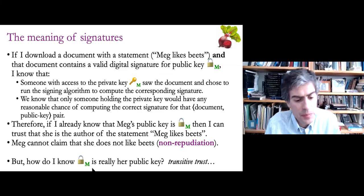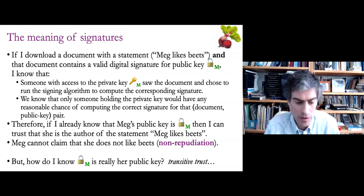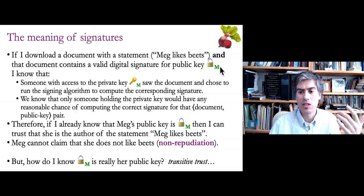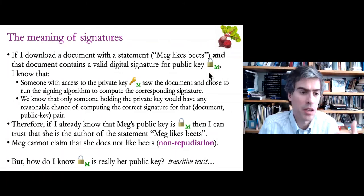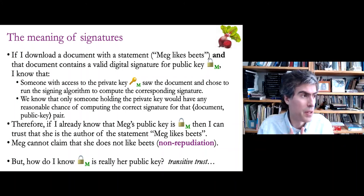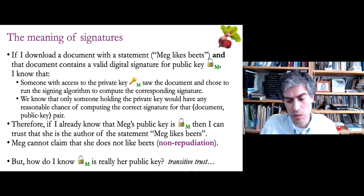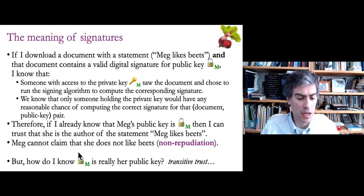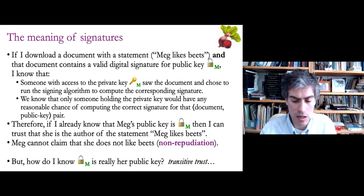The outstanding problem is we have to know what the correct public key is for the person. The document had a claim, a signature, and a public key. We did verification using the public key, but we assumed ahead of time we knew what the correct public key was for Meg. It seems like we're going in circles — a chicken and egg problem with trust. The way we resolve this is with transitive trust, which is the other big idea in authentication that lets us securely communicate with strangers. If we knew ahead of time through some real-world means what Meg's correct public key was, we'd be good to go. But for a new person, we need to verify that public key, and transitive trust is how we do that.